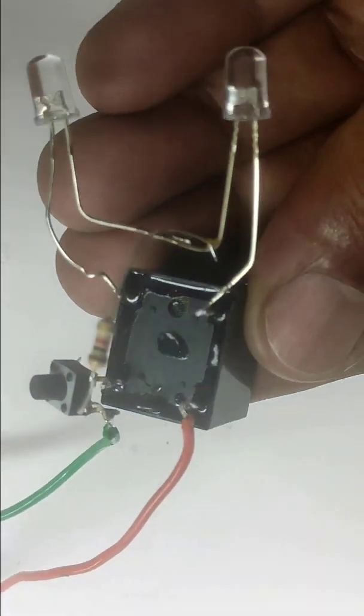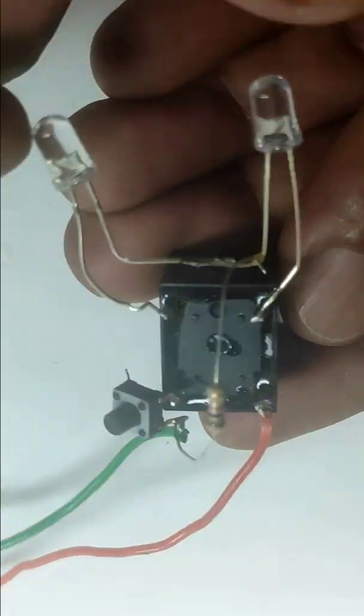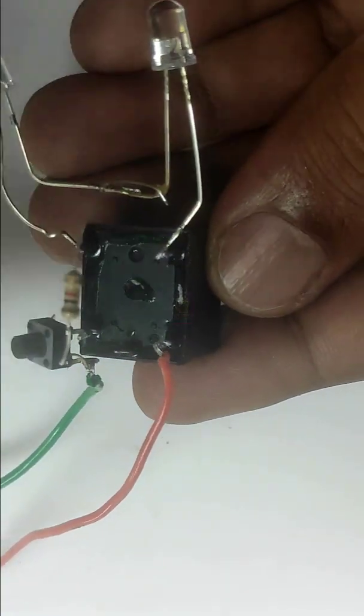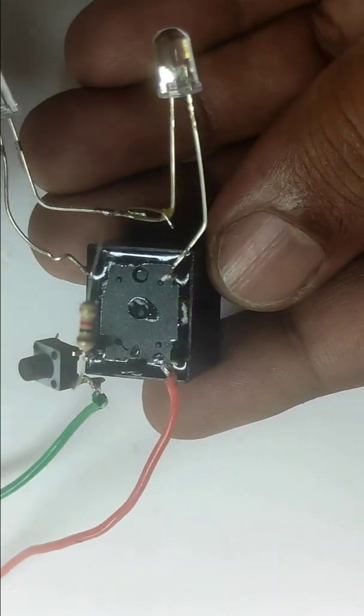The LEDs are connected to the normally open and normally closed pin of the relay, and a push to on micro switch is connected to the negative line of the coil.